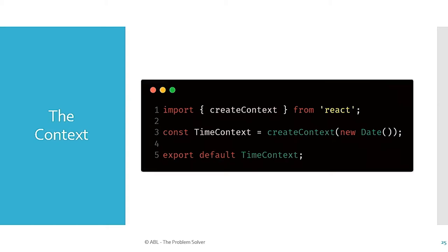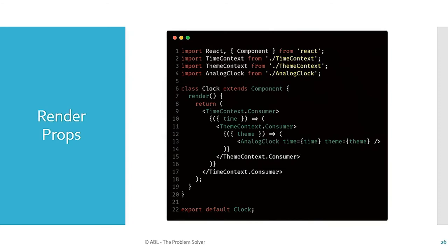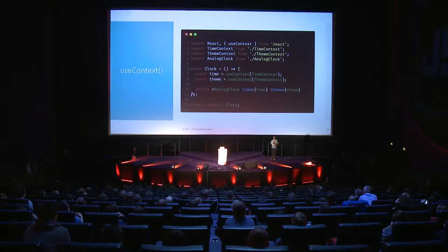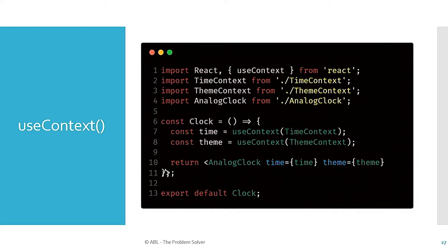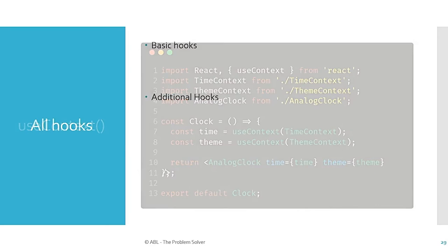We can also use context. I've got a context using the React 16.3 API called a time context. This was the old code — using two contexts, a time context and a theming context, with lots of nested brackets and hard to read. With the useContext hook: I just import useContext from React, call it to retrieve the current value from a context, and I have the current time and current theme. It sets up a subscription behind the scenes, so any time the context value is updated, this component automatically re-renders. Much easier to write and read.